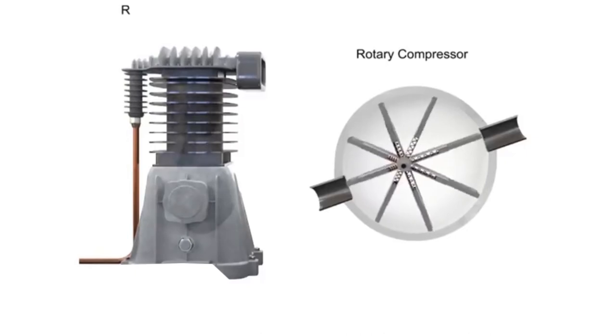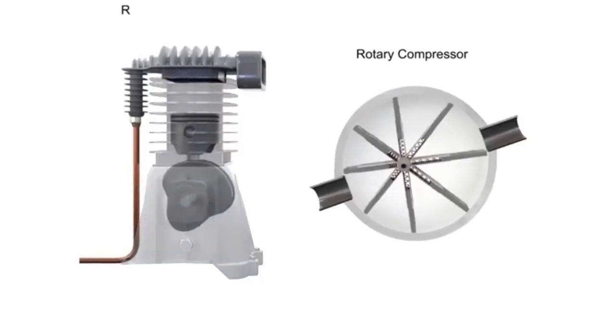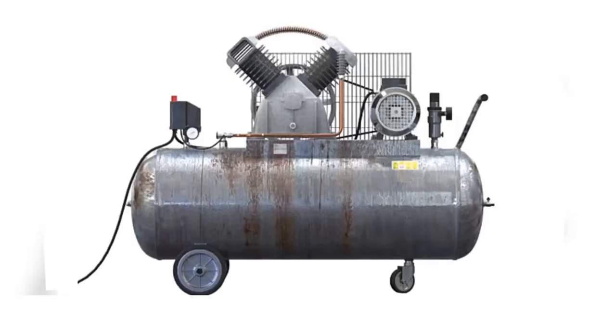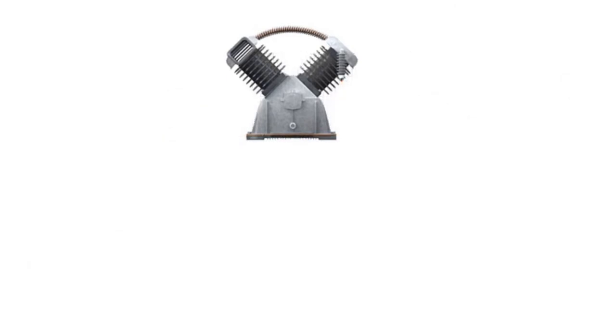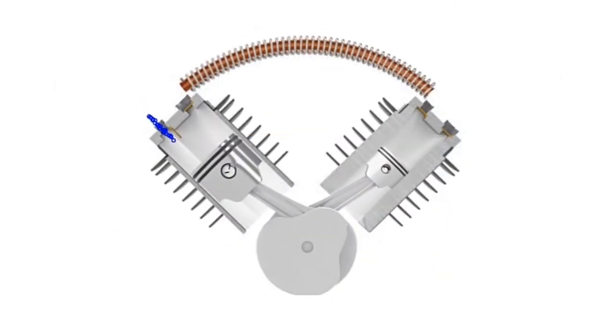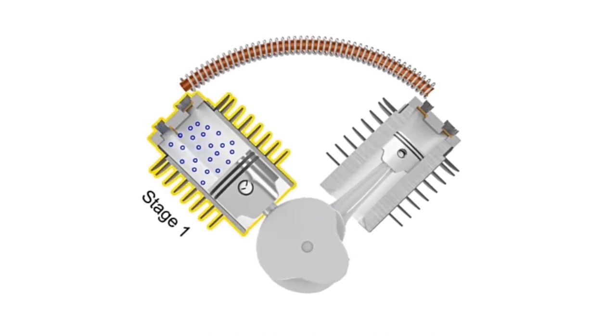But what happens in a two-stage air compressor? Let's find out. Two-stage compressor. Unlike the single-stage compressor, the compressed air never goes in the receiving tank but rather goes through another round of compression via the second piston before it is finally directed to the storage tank.